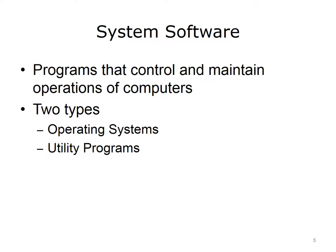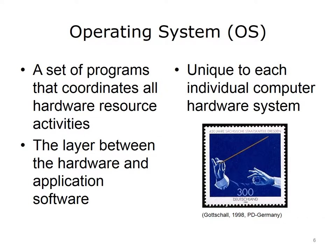Often the distinction between these two types is not clear, because utility programs may be considered to be part of the operating system. The operating system is the set of programs that coordinate all the activities of the computer, including all the hardware, commonly referred to as resources. Think of an OS as the layer between the computer hardware and the application software. OSs are unique to each individual hardware system — a version of Microsoft Windows running on a desktop will not run on a smartphone; a different version would be required.